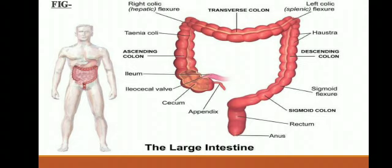The remaining part of the large intestine is termed the colon. The colon is divided into 4 parts: the ascending colon, which ascends on the right side of the abdomen; second, the transverse colon; third, the descending colon; fourth, the sigmoid colon; and last, the cecum with vermiform appendix. These all are about your large intestine.